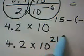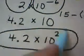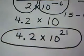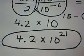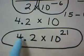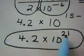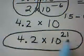And I'm left with the answer 4.2 times 10 to the 21st power. And we're done. The reason the answer is in scientific notation: the first part is already between 1 and 10, and the second part is a power of 10. So we're finished.